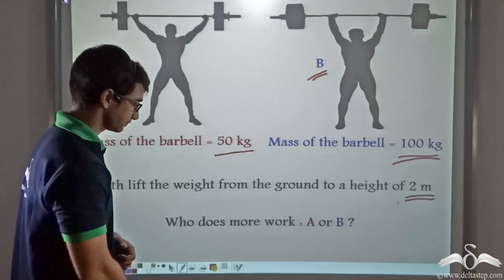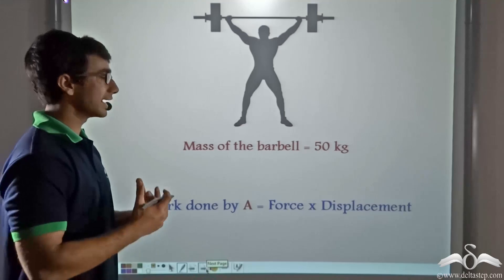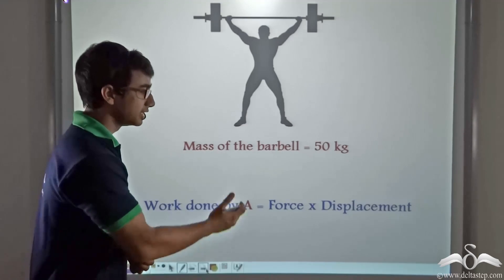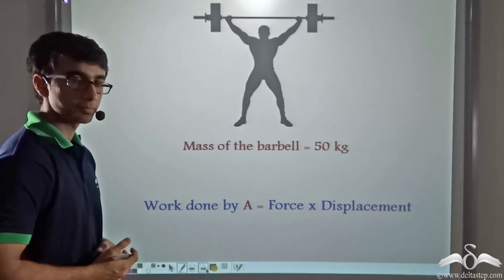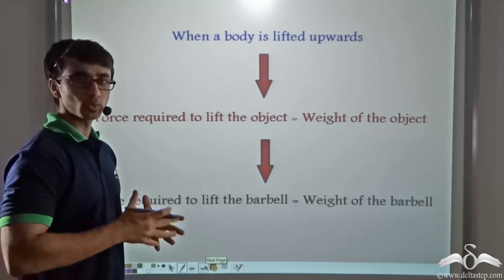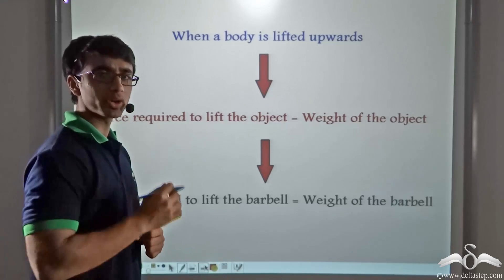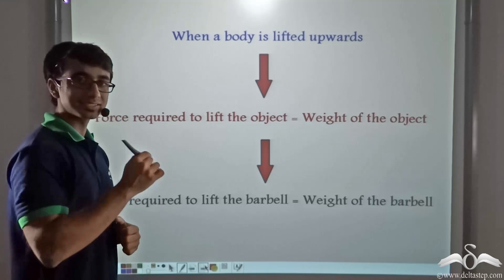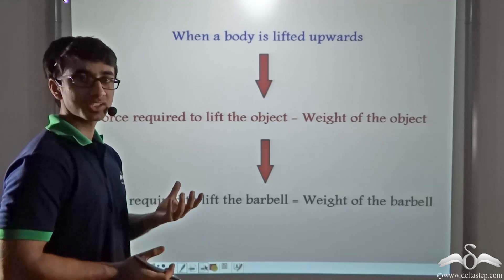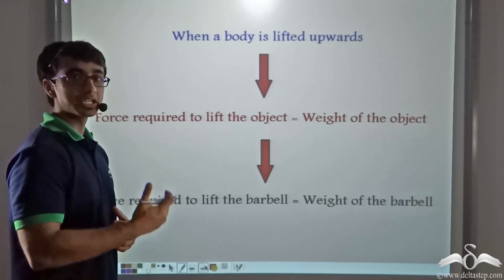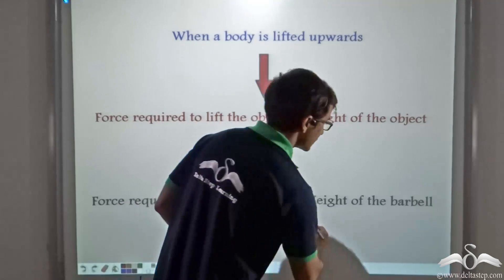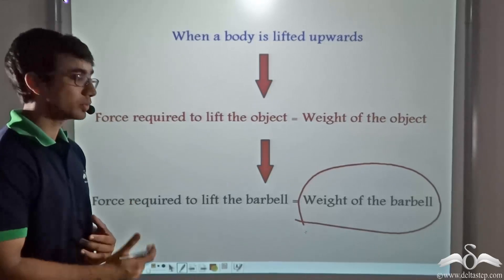To find out the work done by weightlifter A, we multiply the force he applies on the barbell by the displacement he causes to the barbell. When a body is being lifted upwards, gravitational force acts on it in the downward direction, giving every body its weight. To lift the barbell upward against gravity, the force applied must equal the weight of the barbell. Let us calculate that weight.